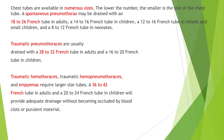Chest tubes are available in numerous sizes; the lower the number, the smaller the tube. Spontaneous pneumothorax may be drained with an 18 to 26 French tube in adults, 14 to 16 French in children, 12 to 16 French in infants and small children, and 8 to 12 French in neonates. Traumatic pneumothorax is usually drained with a 28 to 32 French tube in adults and 16 to 20 French in children. Traumatic haemothorax may require larger tubes: 36 to 42 French in adults and 20 to 24 French in children to provide adequate drainage without becoming occluded by blood clot or purulent material.